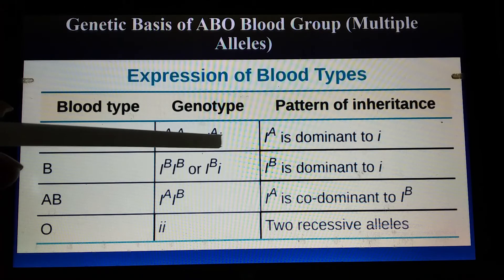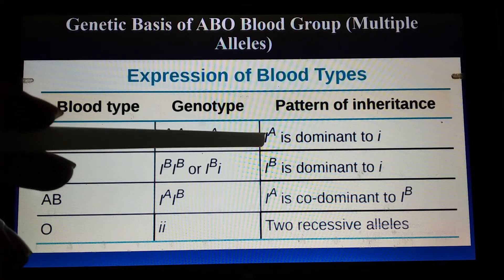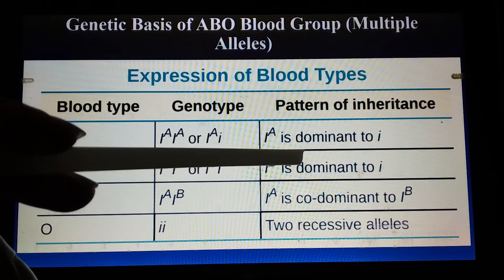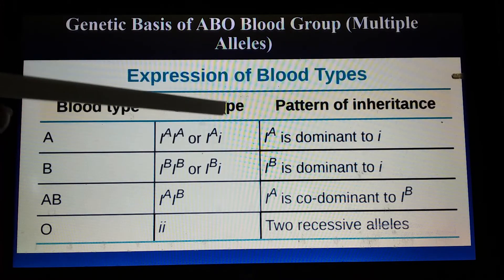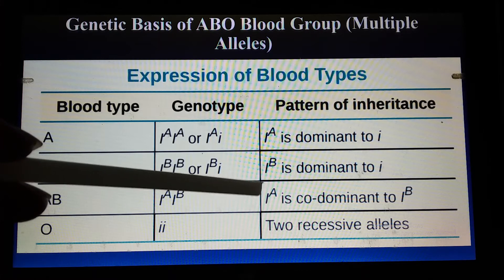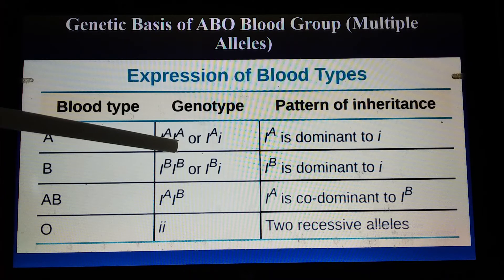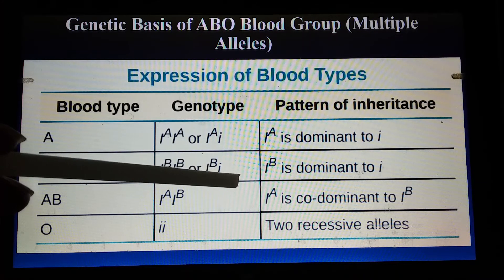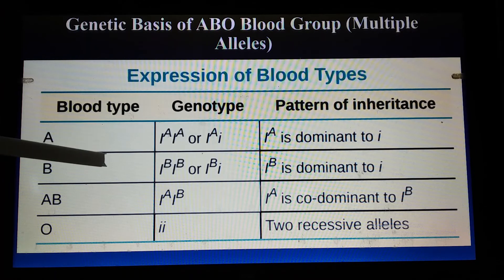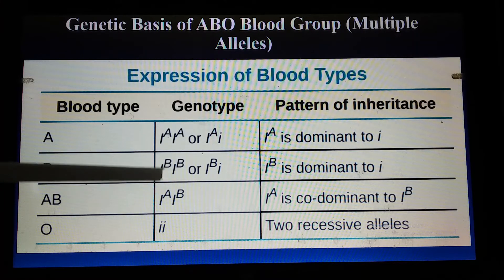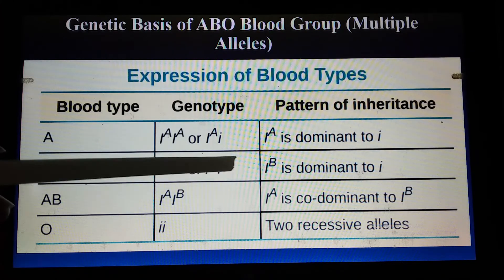Since capital I-A is dominant over small i, the small i is the recessive allele. If this type of genotype is inherited to the next generation, the child will have blood group A — whether homozygous or heterozygous. The same is the case with blood group B. You can see two alleles for blood group B: one is homozygous I-B I-B, and the other is heterozygous capital I-B and small i. In this case, I-B is dominant over i.